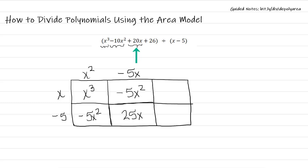I need 20x, so I need to take off 5x. This added together gives me a 20x. X times negative 5 gives me that negative 5x.